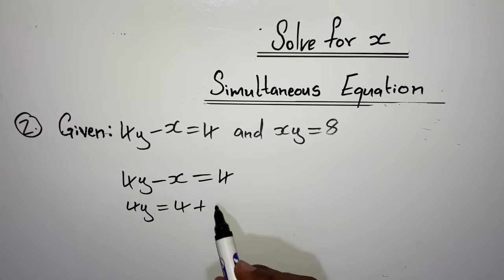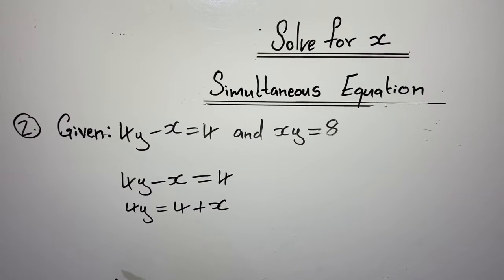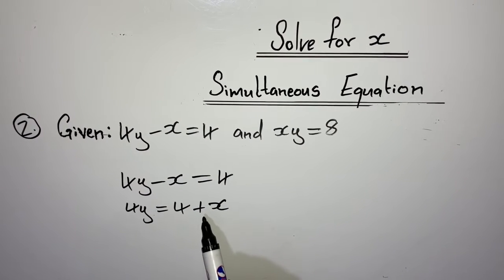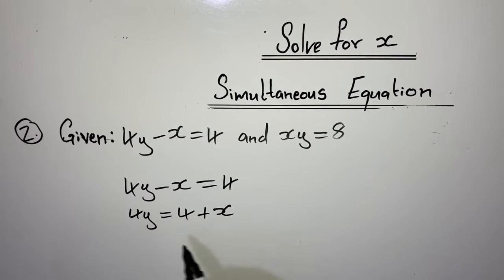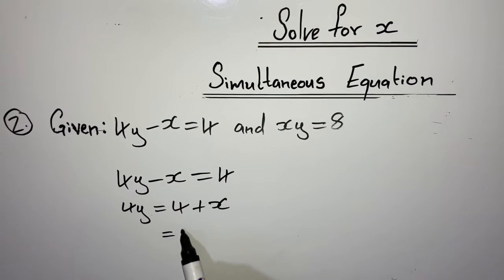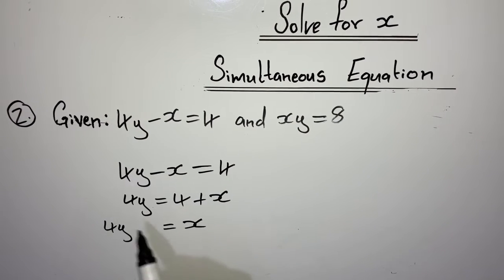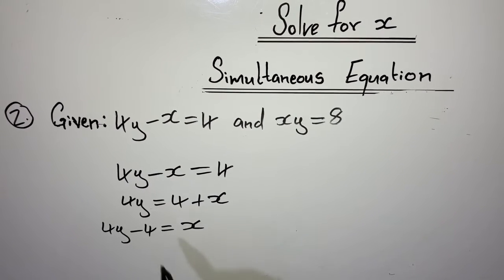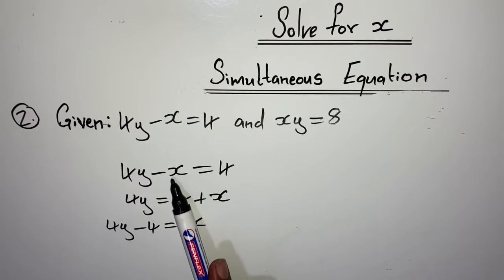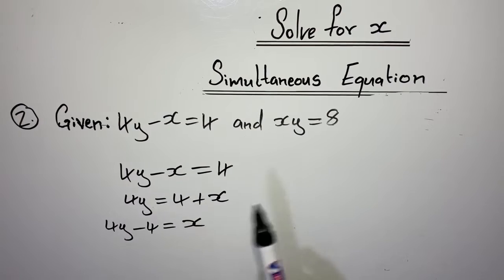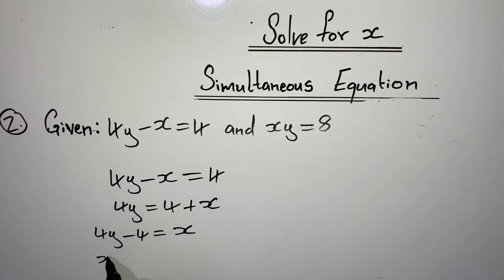Equating the brackets to 0: y minus 2 = 0 gives y = 2. Then y plus 1 = 0 gives y = negative 1. So I found my y values. The instruction is still to solve for x and y simultaneously, so now we've solved for y and need to find the x values.